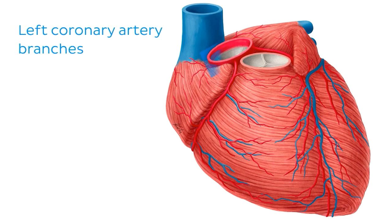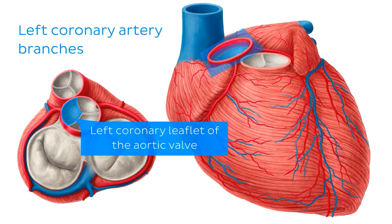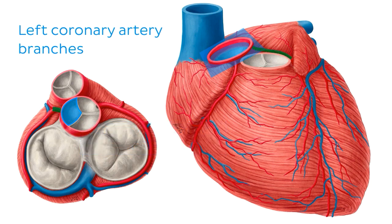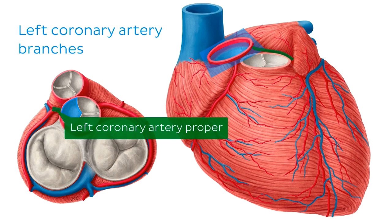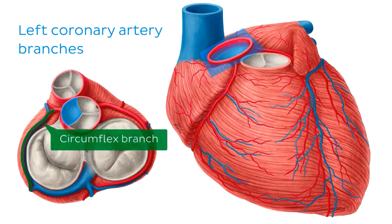The left coronary artery usually arises immediately superior to the left coronary leaflet of the aortic valve. It continues as the left coronary artery proper for only about 10 to 15 millimetres before dividing into its two primary branches: a circumflex branch and an anterior interventricular branch. The circumflex branch follows a route along the left part of the coronary sulcus, wrapping around the circumference of the heart to its posterior aspect.